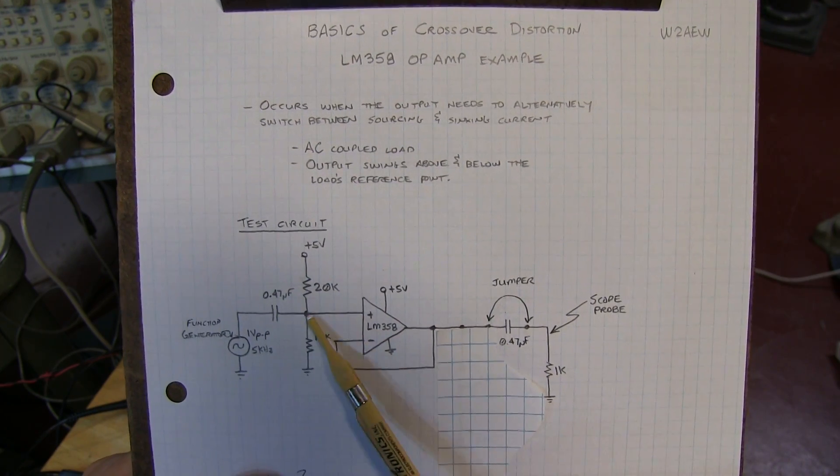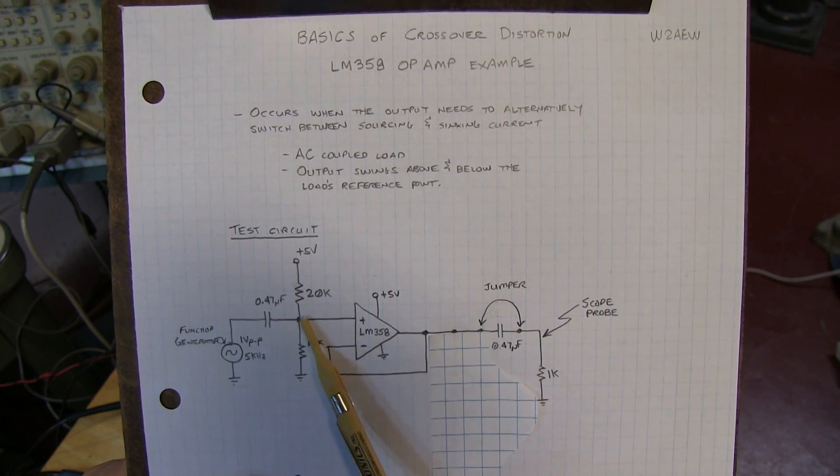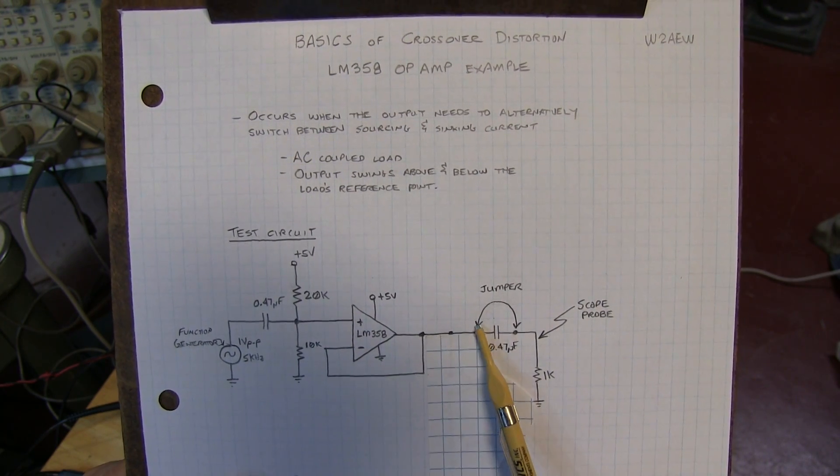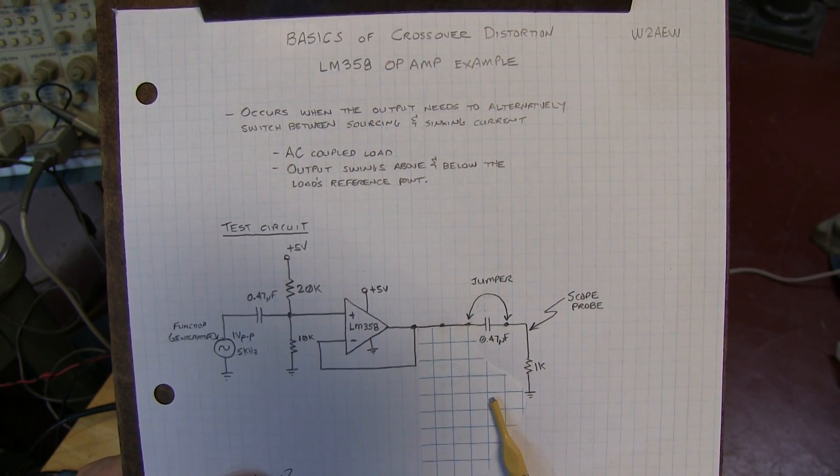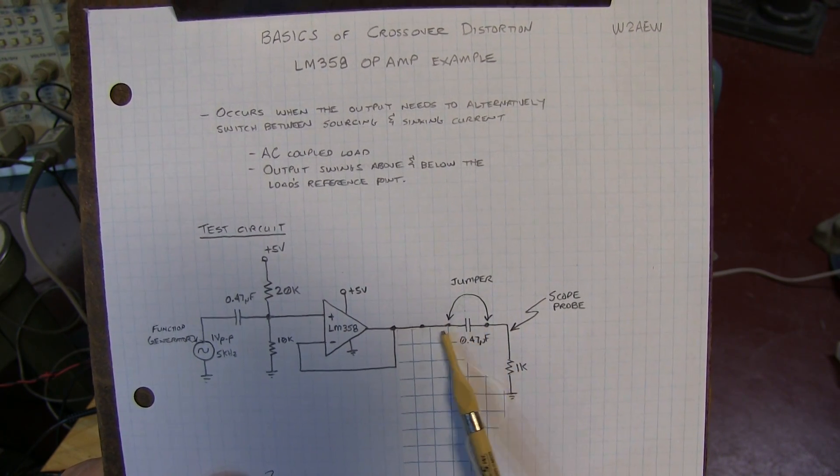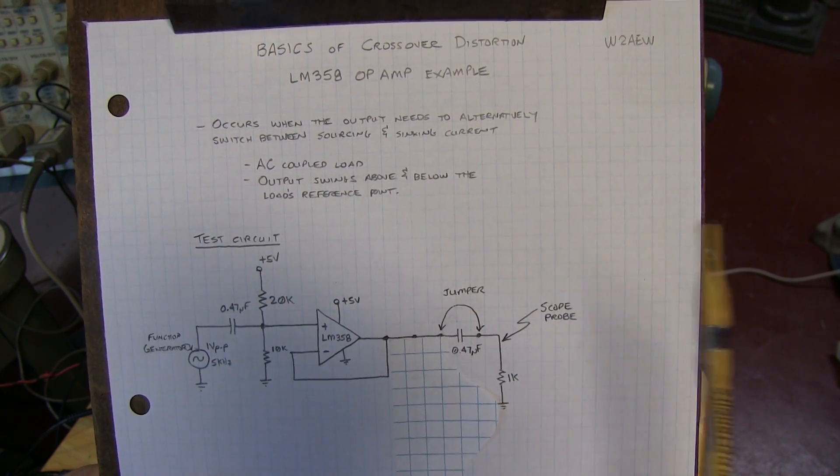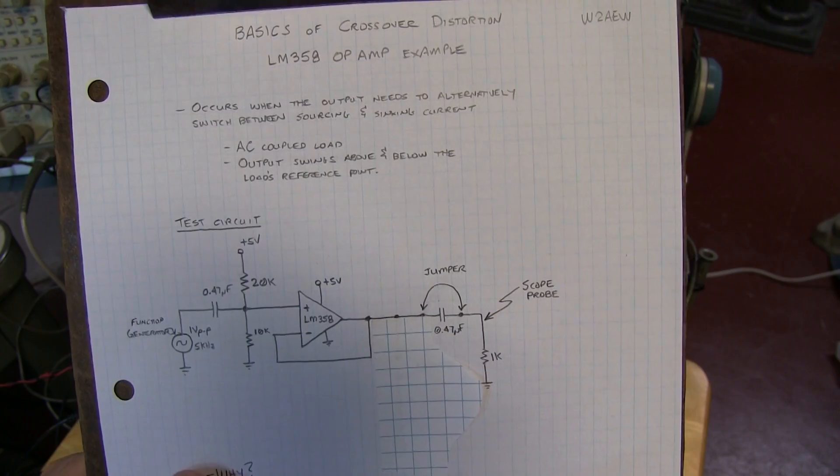So the input is swinging plus and minus a half a volt around this 1.6 volt input, and that's what we'll get at the output if we DC couple the output. So I've got the breadboard configured so that I can have a jumper across the AC coupling, so we can see what the output looks like when it's DC coupled, and what happens when we remove the jumper and we're AC coupled.